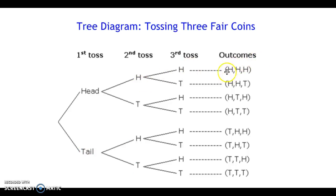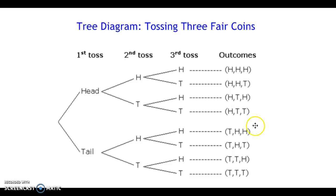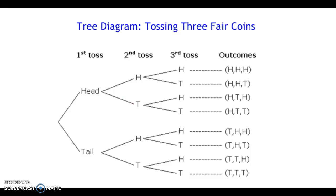You could have gotten heads on the first flip, heads on the second flip, and heads on the third flip, or you could have gotten tails on the first, tails on the second, tails on the third — and there are all sorts of possibilities in between. This is useful because when you're writing out all the different possible outcomes, you can determine the probability a little bit easier.